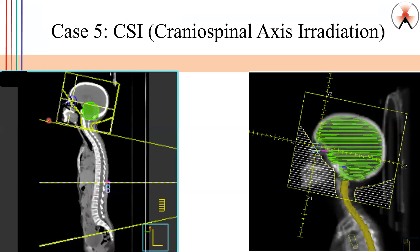We have to make sure that the brain field also has this type of divergence where they meet because the risk here is that if this region is prescribed 3,000 centigrade and this adjacent region is also prescribed 3,000 centigrade, and if we don't match this carefully, there could be overlap. The overlap could mean that all along this line, we have contribution from this field — 3,000 — and an additional 3,000 from this field. That's 6,000 centigrade to the spinal cord, which will paralyze this patient. That's why it's such a complex and delicate procedure.